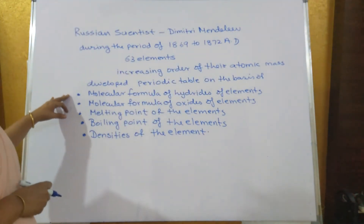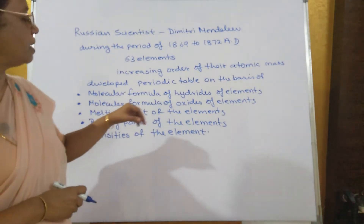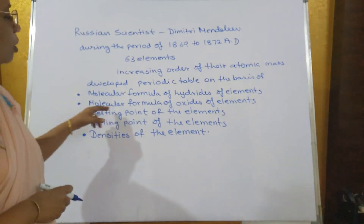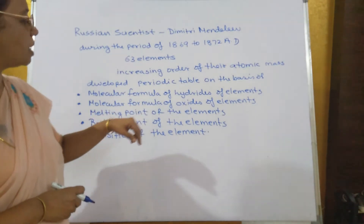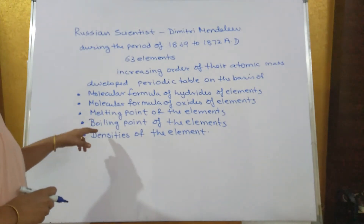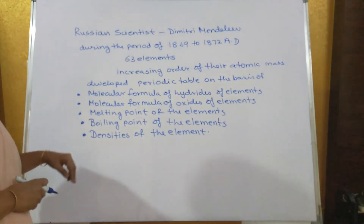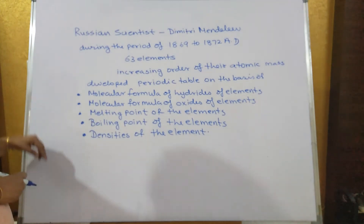Which physical and chemical properties? Molecular formula of hydrides of elements, molecular formula of oxides of elements, melting point of the element, boiling point of the element, and densities of the element.